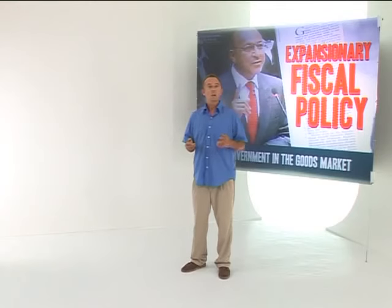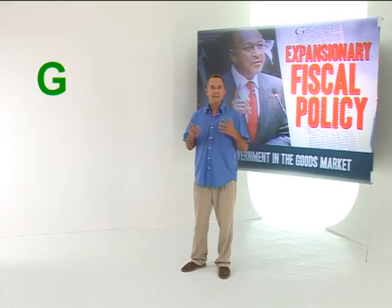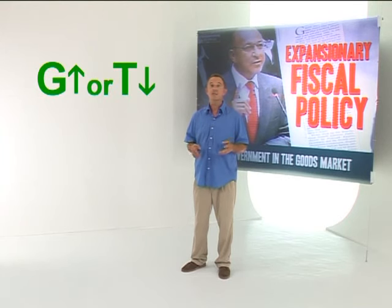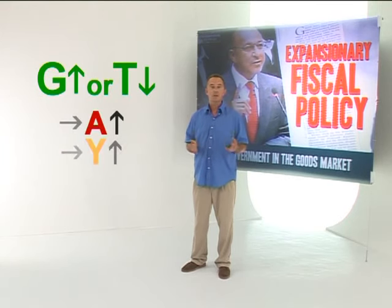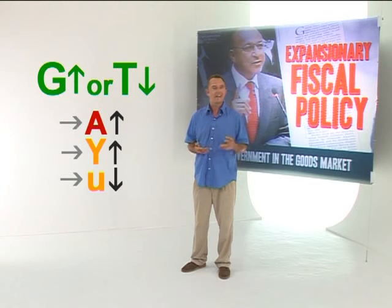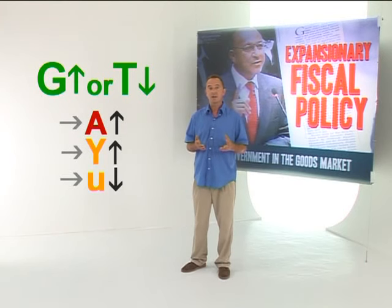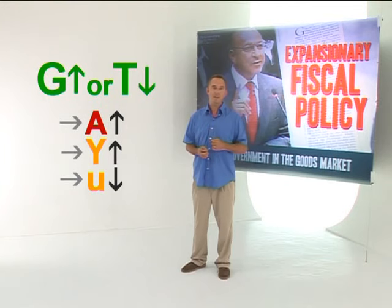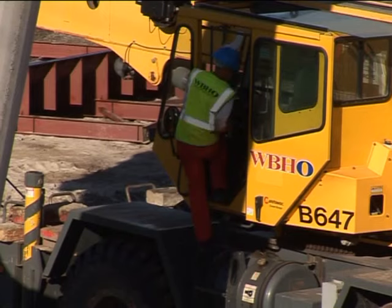From this, we can see that an expansionary fiscal policy — such as increasing government spending or reducing taxation — can be used to increase total spending and the level of production and income in the economy. This in turn reduces unemployment, because higher production employs more labour.